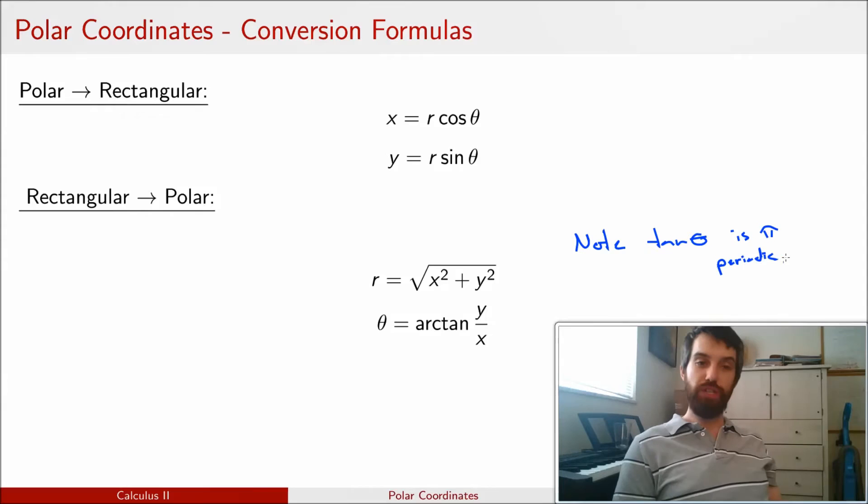And what I mean by an expression like saying it's pi periodic is that if I have any value that satisfies this equation, then that value plus pi, plus 2 pi, plus 3 pi, and generally plus any n pi, where n is an integer, is going to all give the same value.